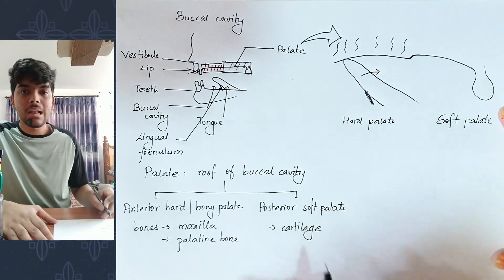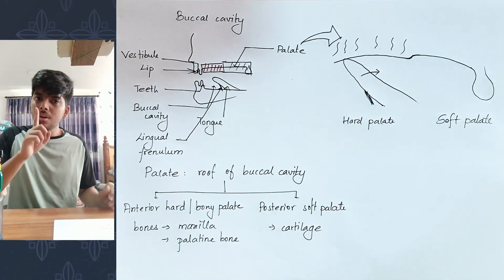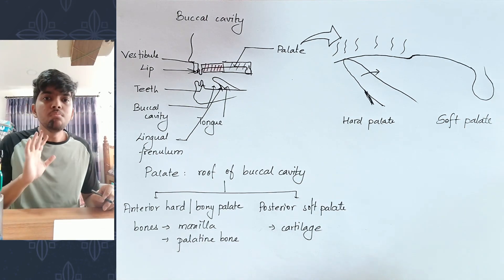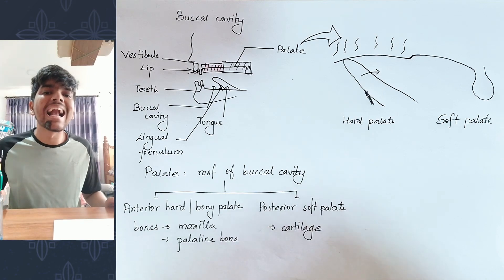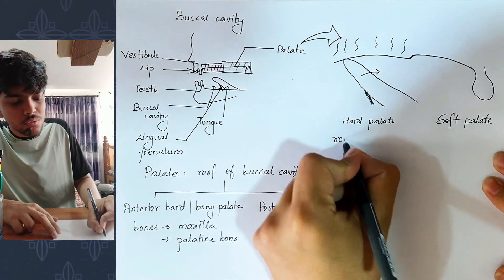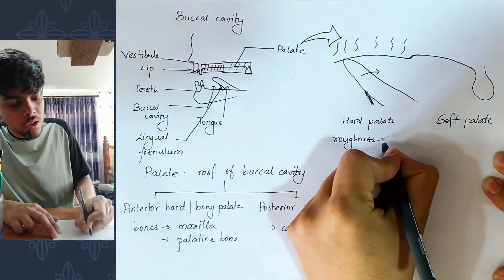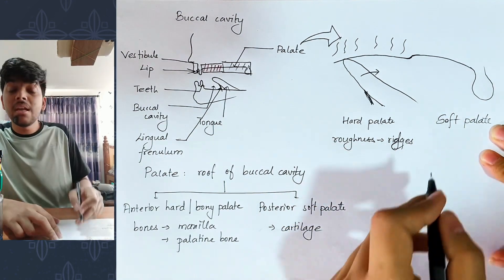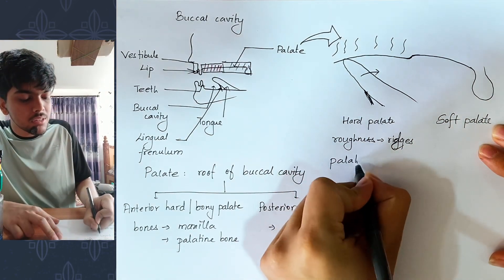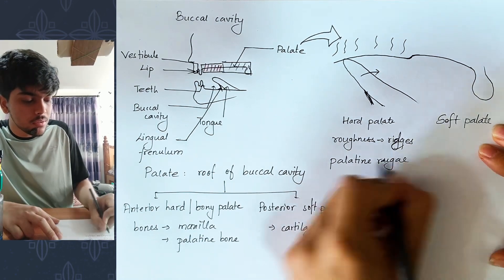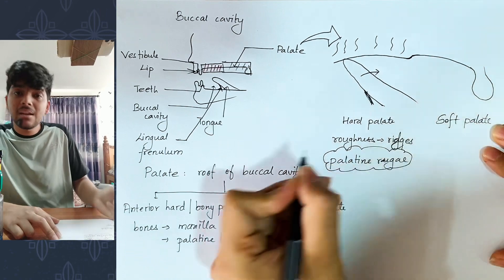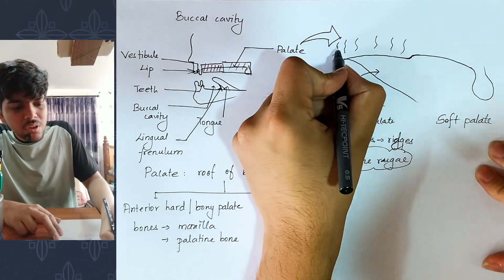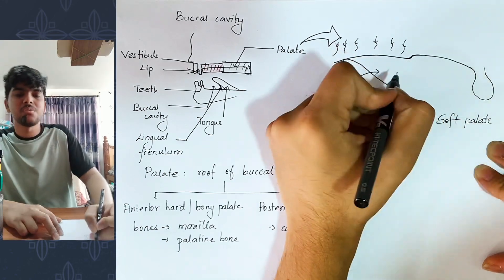The hard palate has a roughness to it — it is not smooth but rough. This roughness is due to wrinkle-like ridges called palatine rugae. The palatine rugae are associated with the palatine bone and the palate.